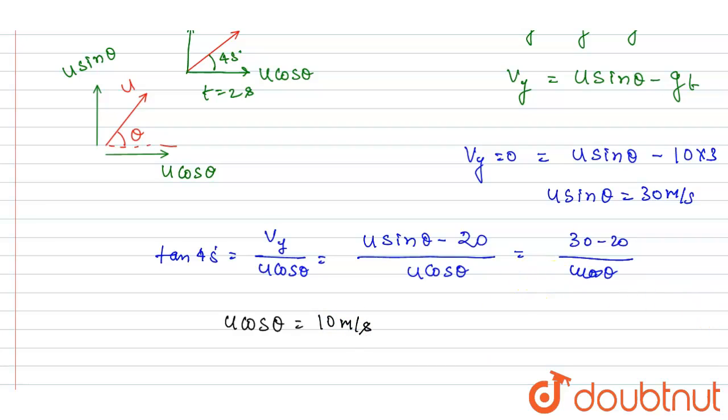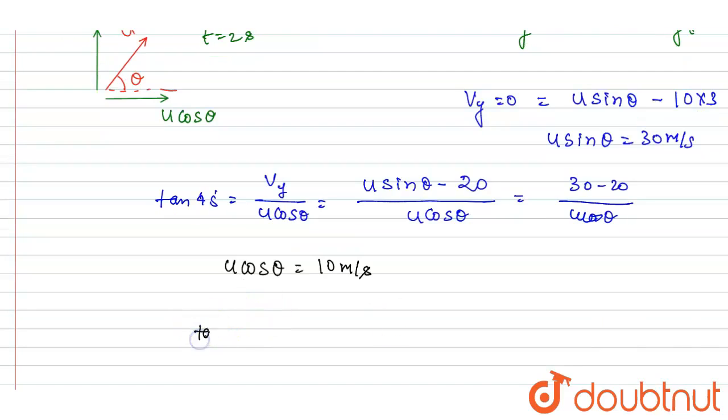U cos theta is 10 meters per second, u sin theta is this. You can calculate the angle of projection tan theta just by dividing the two. If you divide these two equations, equation 1 by equation 2, you will get tan theta equals this.